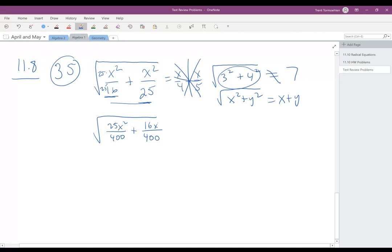And then this one's 16 x squared for the same reason. And so that equals the square root of 41 x squared over 400.